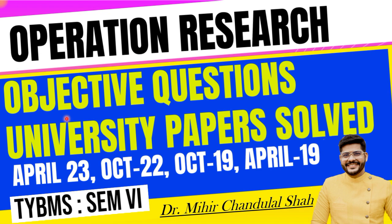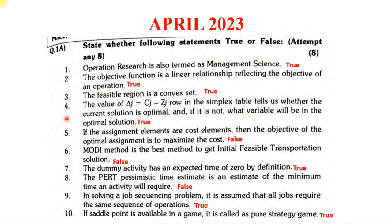Let us see one by one, in each year, what objective questions were asked and what their solutions are. The very first paper is April 2023, so we are going in descending order — the latest first. Under April 2023, 'State True or False' was asked for eight marks. The questions and answers are noted. You can go through them and take a screenshot.